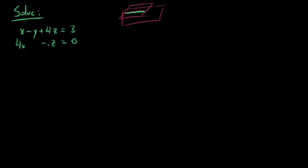So let's start. Using elementary row operations, we're going to put this into what we call row echelon form — that stair-step pattern in which the leading coefficient of each row happens to be one.